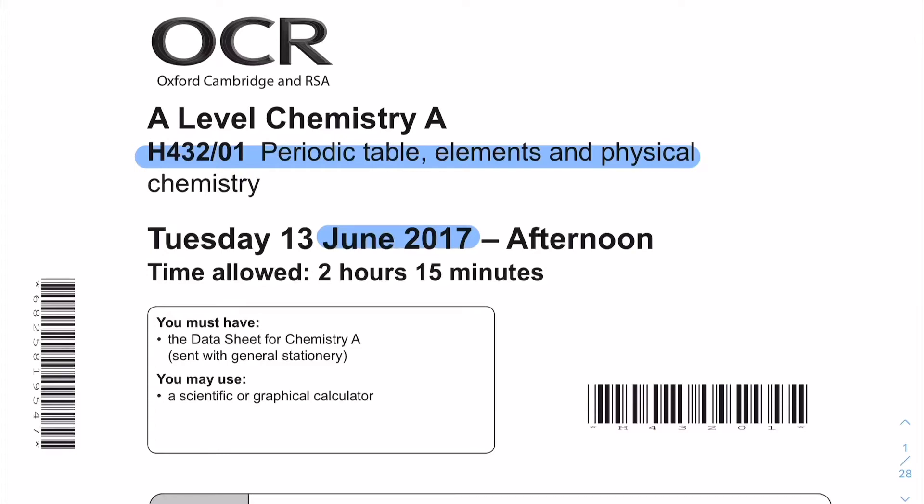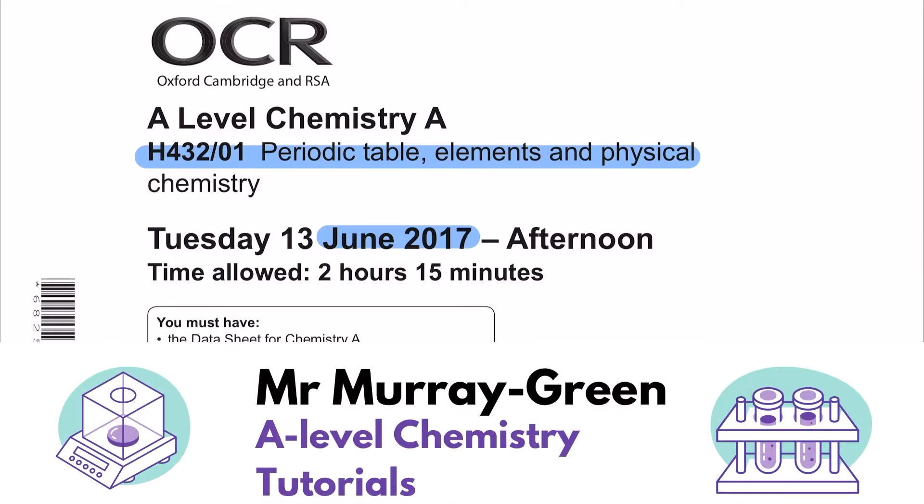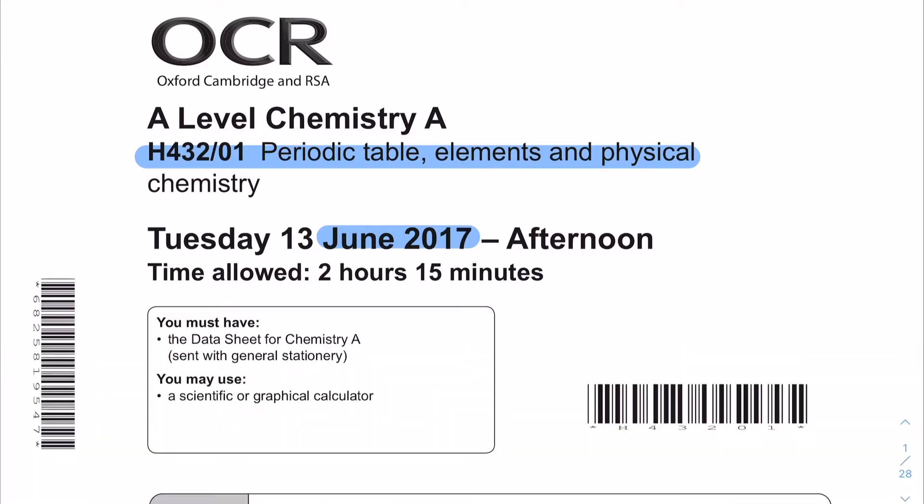The periodic table, elements and physical chemistry exam papers on the OCR A specification for A-level chemistry have multiple choice. The first 15 questions are all multiple choice questions and the mark scheme, whilst it does deliver the right answers, doesn't provide any explanation about why that is the right answer. So for this 2017 version of paper one, periodic table, elements and physical chemistry, I'm going to take you through the answers and explain why each one is as it appears in the mark scheme.